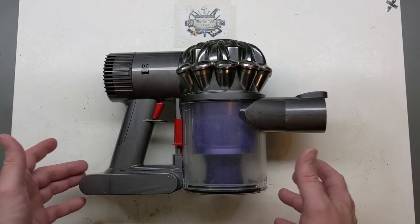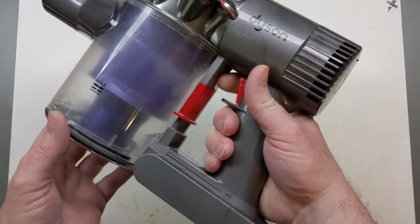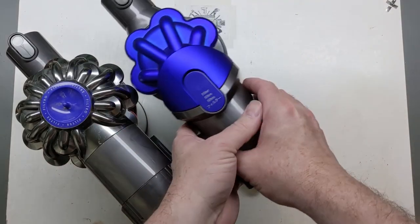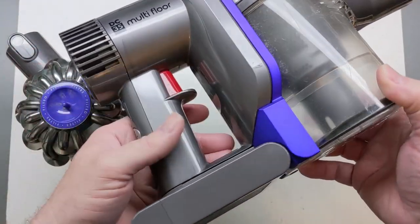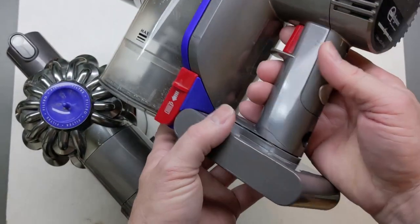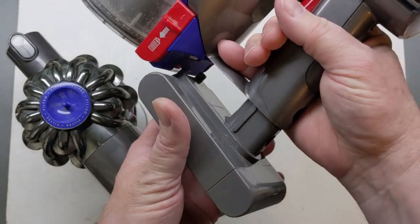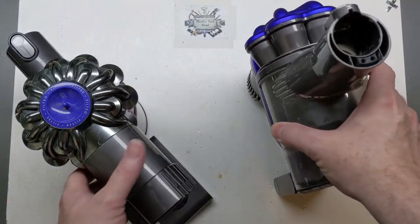Today on the bench I have a non-working DC58 Dyson vacuum. I knew this was going to be very similar to my wife's DC35 that I worked on over a year ago in a video. The problem ended up being the battery, and the battery is very easily replaceable on the DC35.